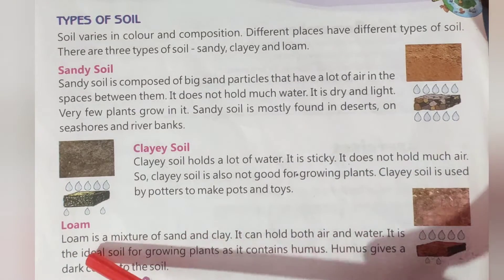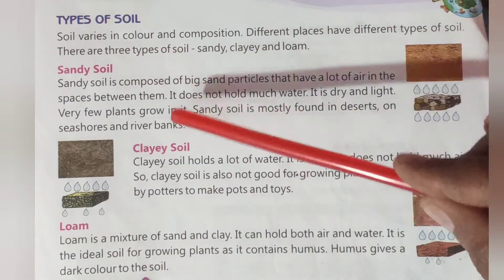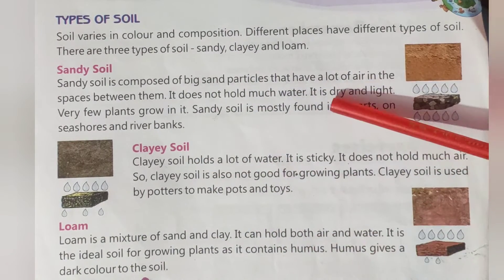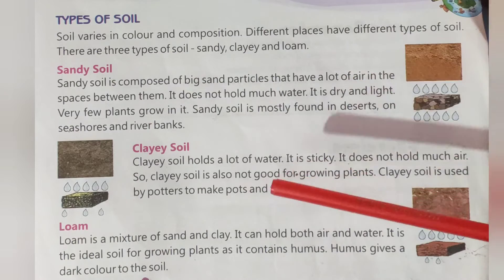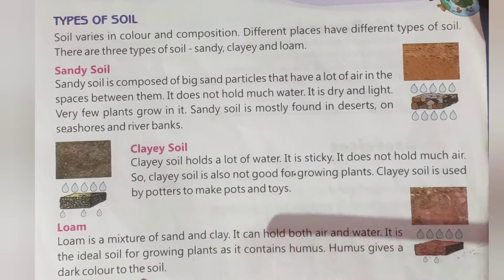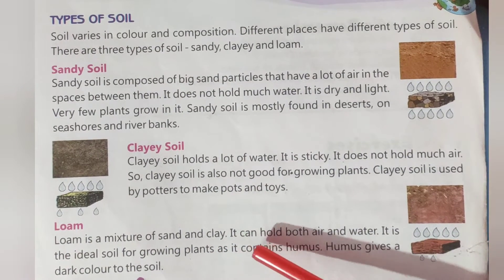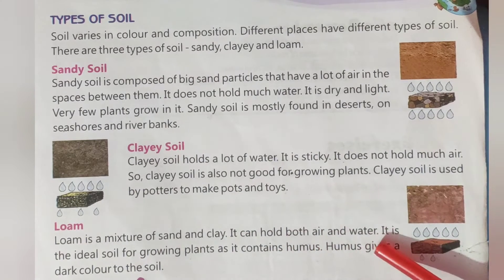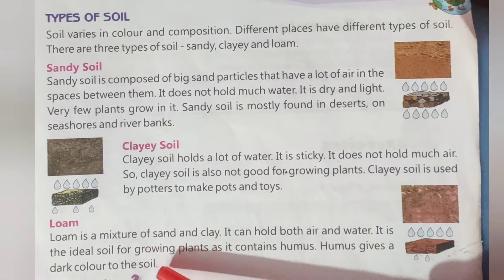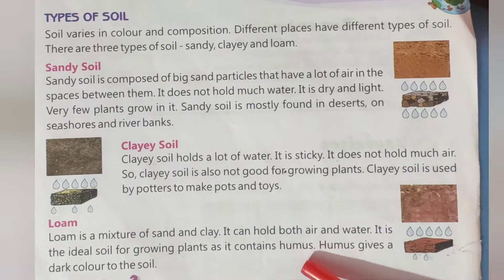The third type is loam. Loam is a mixture of sand and clay. In sandy soil, air is good but water retention is poor. In clay soil, water is retained but air circulation is poor. So the mixture of sand and clay — loam — is best for growing plants. It can hold both air and water.